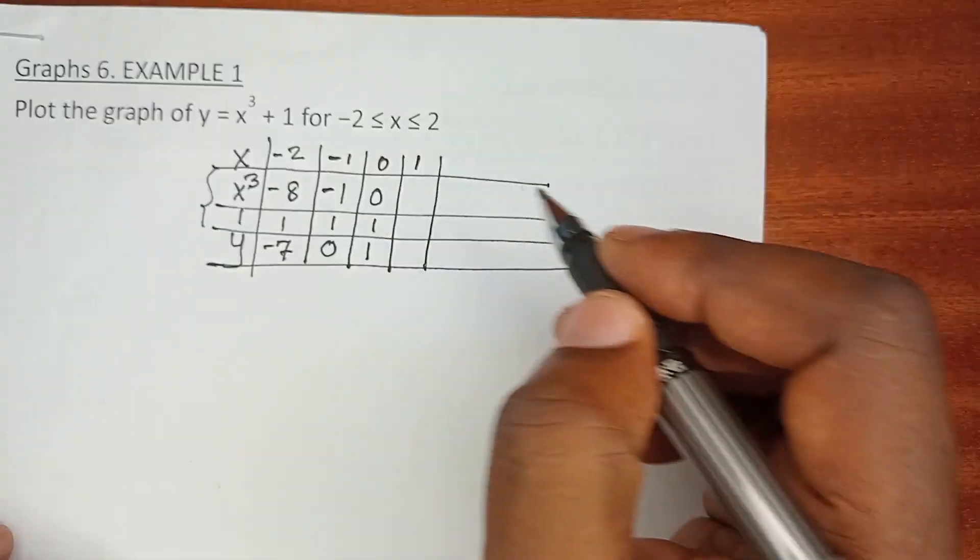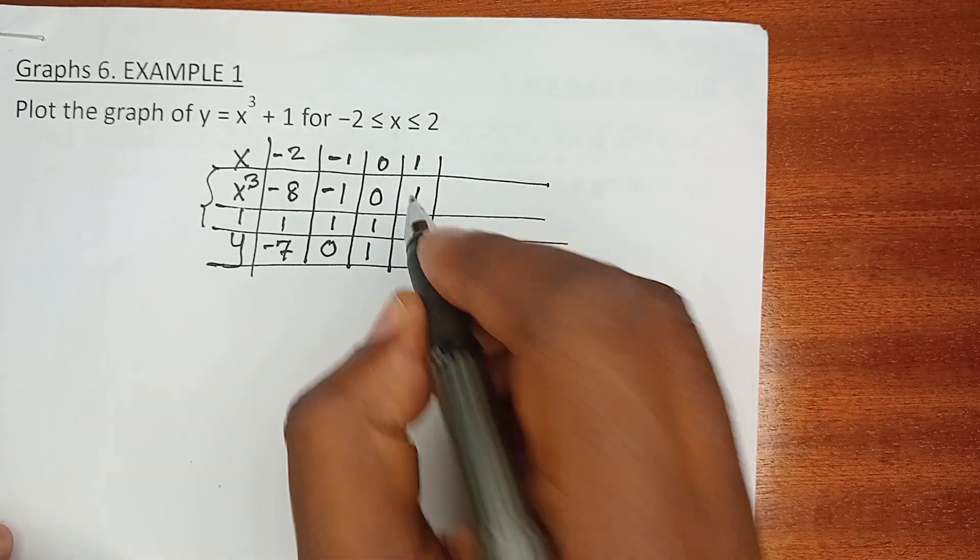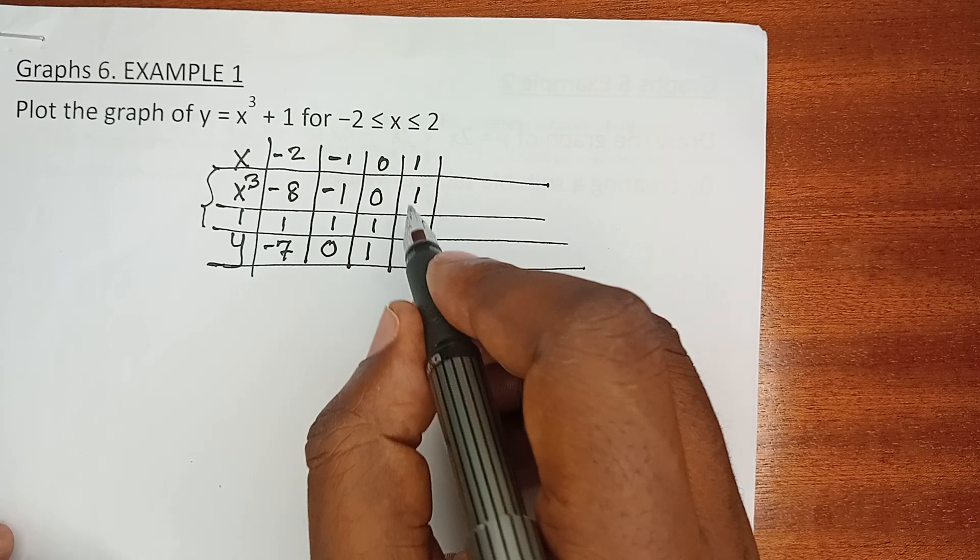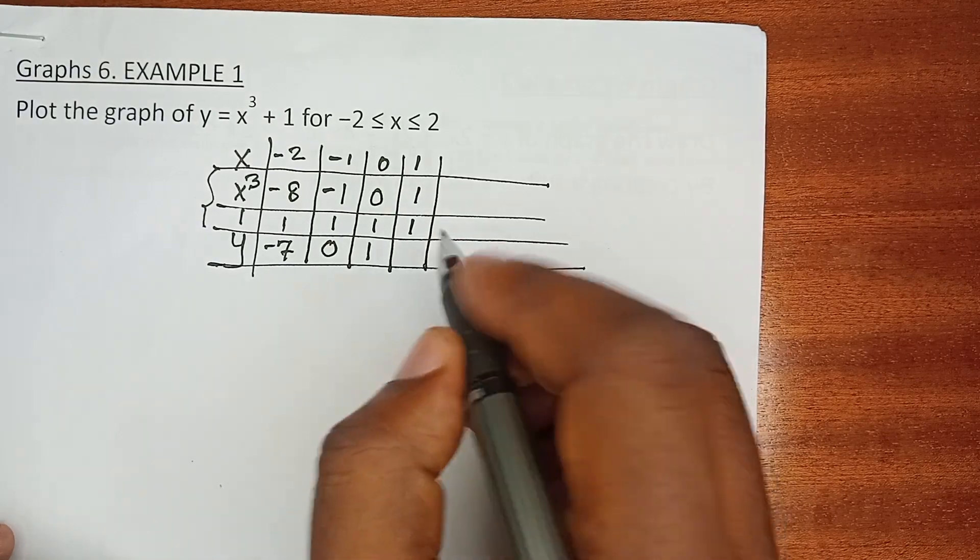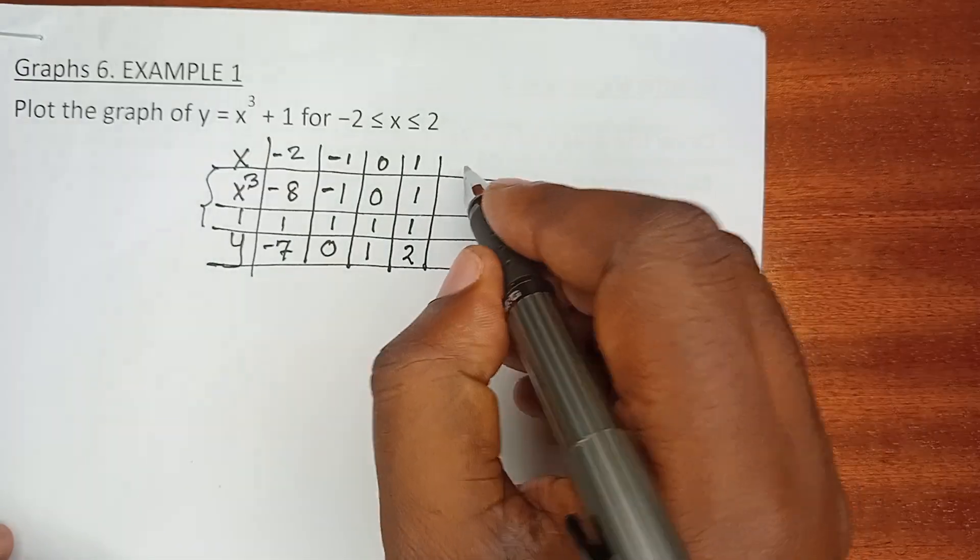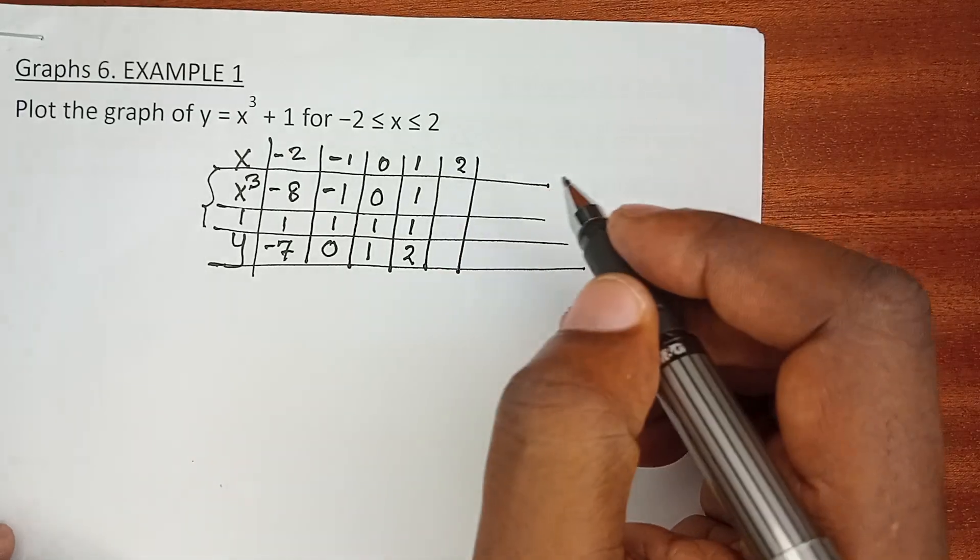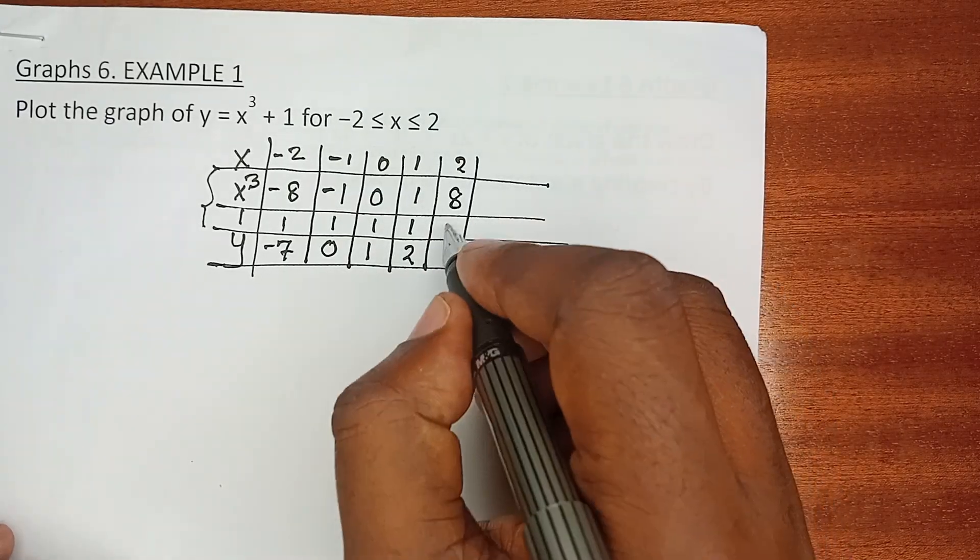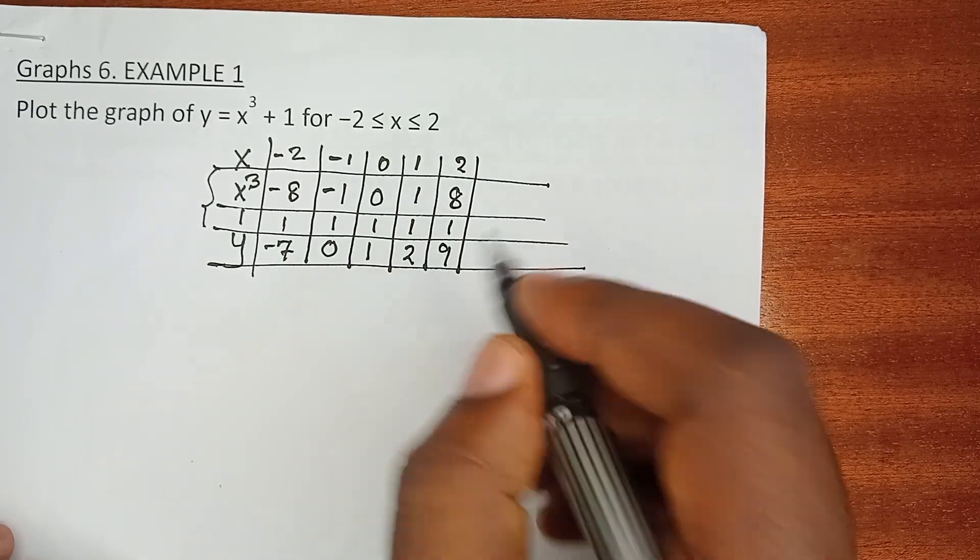When x is 1, 1 cubed is 1, and a constant of 1, and of course y is the sum of the two rows which is 2. When x is 2, we have 2 cubed is 8, the constant 1 remains, and the sum of these is 9.